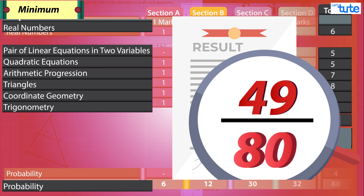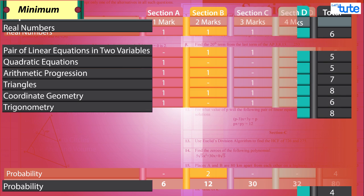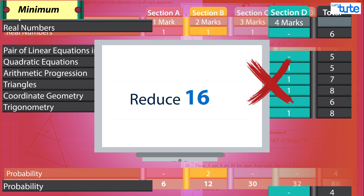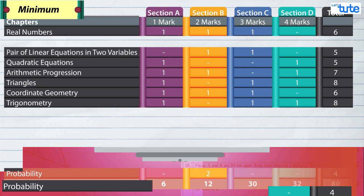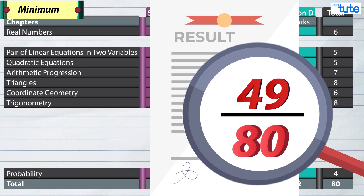But let's make it even more practical. Assuming that you don't know any question from section D, then we directly reduce 16 marks from these 49 marks, which comes to 33. That's not a bad score, right? So let's at least aim to score 49 marks so that we can score as much as we can.